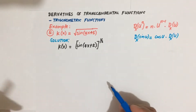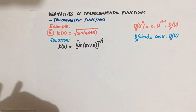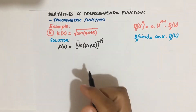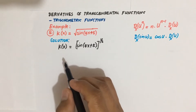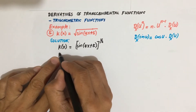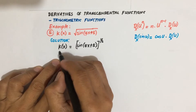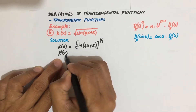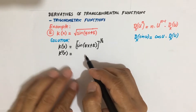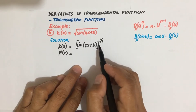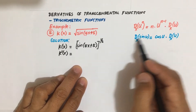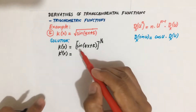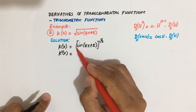To continue, we can now take the derivative of this function. So k prime of x, using the power formula — the whole sine of (4x + 5) is our u here.